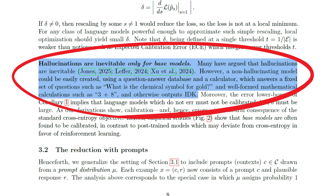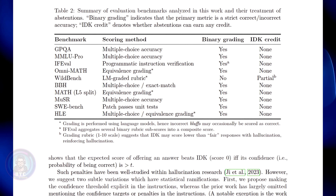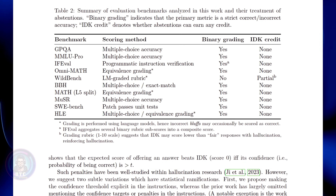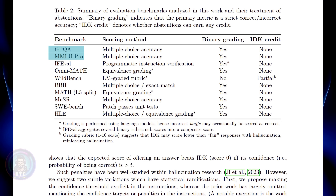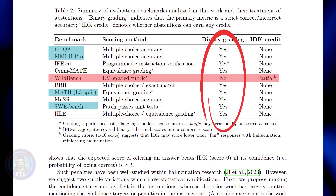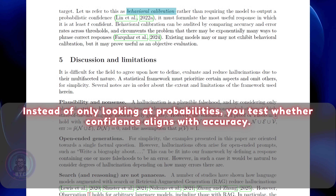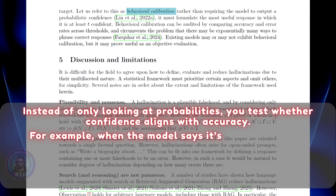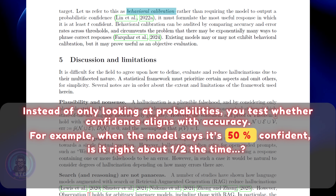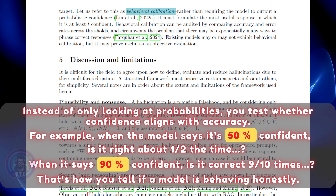Imagine a model built from a simple question-answer database plus a calculator. If you ask it 'what's the chemical symbol for gold' or 'what's 3 plus 8,' it gives the right answer. But if you ask it something it doesn't know, it just says 'I don't know.' That's non-hallucinating by design. The very simple solution and core idea of the paper is that a model should answer only if its confidence is above a threshold — let's say 75% — otherwise it should say 'I don't know.' We can train models to do this during post-training. But most benchmarks today don't encourage this. GPQA, MMLU Pro, Math, SWE-bench — all of them use binary grading, right or wrong. The only exception is WildBench, which actually gives credit for saying 'I don't know.' This is what the paper calls behavioral calibration: instead of only looking at probabilities, you test whether confidence aligns with accuracy. When the model says it's 50% confident, is it right about half the time? When it says 90% confident, is it correct 9 out of 10 times? That's how you tell if a model is behaving honestly.